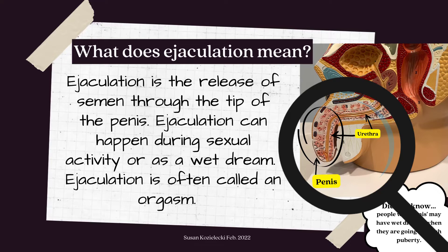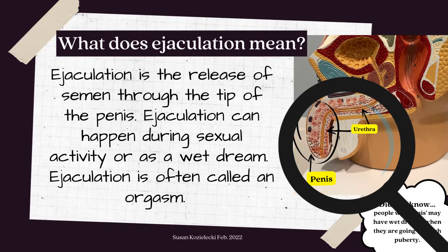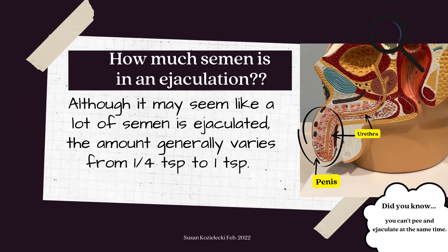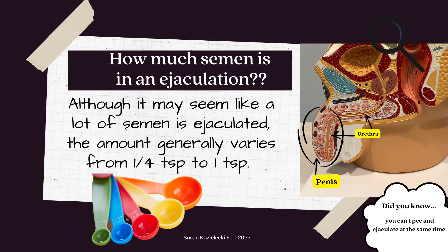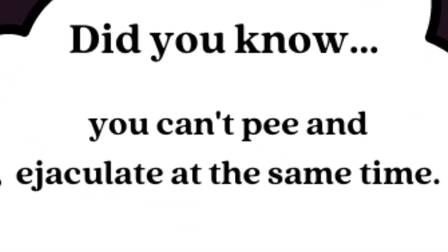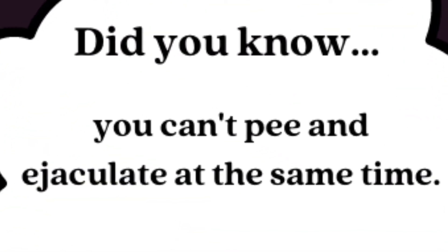What does ejaculation mean? Ejaculation is the release of semen through the tip of the penis. Ejaculation can happen during sexual activity or as a wet dream. Ejaculation is often called an orgasm. Did you know people with penises may have wet dreams when they are going through puberty? It's just a fact of life. Although it may seem like a lot of semen is ejaculated, the amount generally varies from a quarter of a teaspoon to one teaspoon. Did you know you can't pee and ejaculate at the same time?